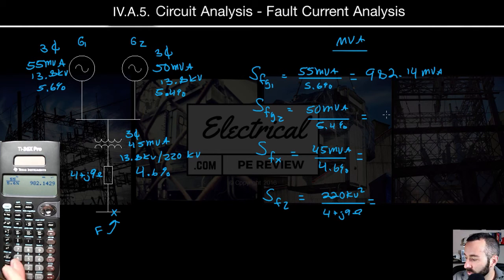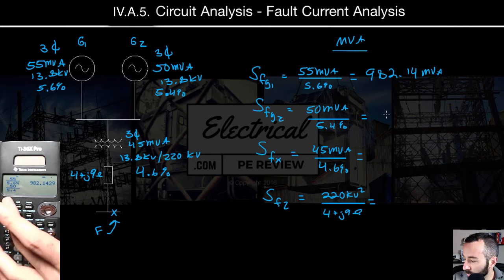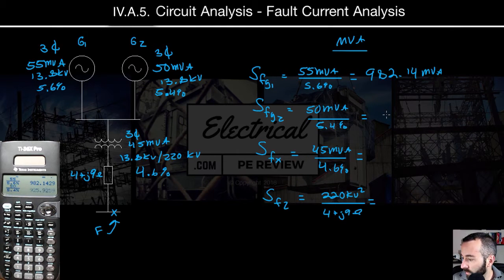Next, SF2, SFG2. We've got 50 MVA divided by an impedance of 5.4%. Gives us an apparent power contribution of 925.93 MVA.